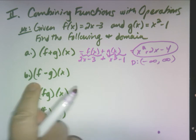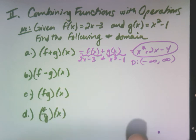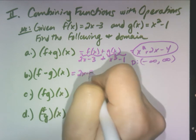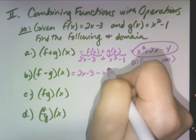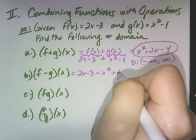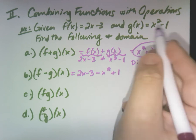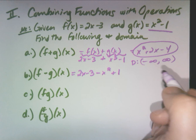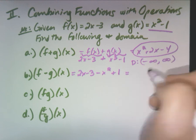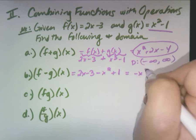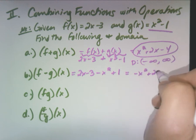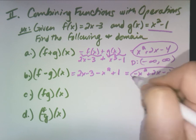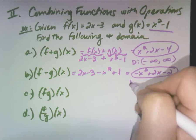For (f − g)(x), it's the same thing but minus. Just make sure you distribute: 2x − 3 − (x² − 1). Distribute that negative and change the signs, giving you −x² + 2x − 2. Domain is all reals.